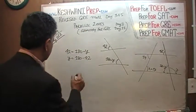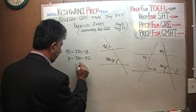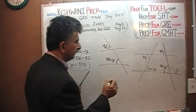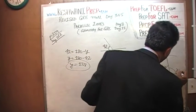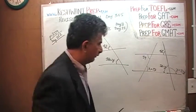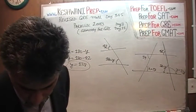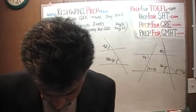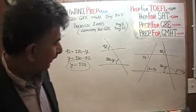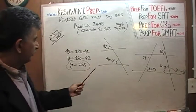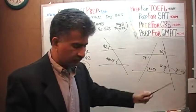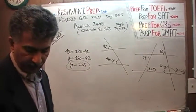So Y equals 180 minus 42. We know 180 minus 40 is 140, therefore 180 minus 42 is 138. Y equals 138. The question asked us to find the values of X and Y. X equals 57 and Y equals 138. Let's move on to the second problem.